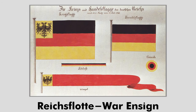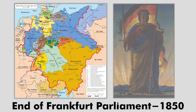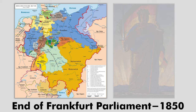However, the Frankfurt parliament was short-lived. In 1850, the Frankfurt parliament collapsed and the German Confederation was restored under Austrian presidency, who suppressed the actions of the failed Frankfurt parliament, including the tricolor.